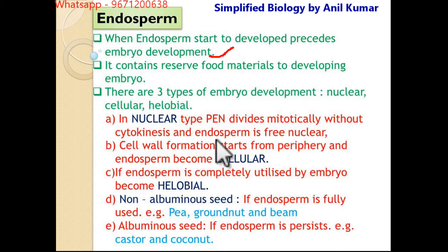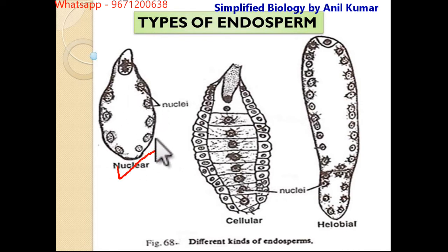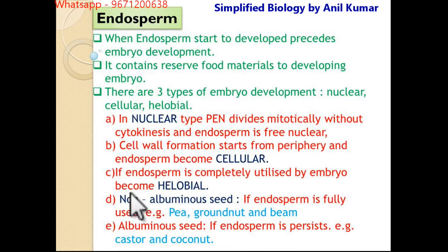In nuclear endosperm, the cell is divided mitotically without cytokinesis and the endosperm is free nuclear. The cell can be divided mitotically one by one — that is where the nuclear cell is formed. After that, the cell wall is laid down in between them, so the cell wall is formed and the structure looks like that.